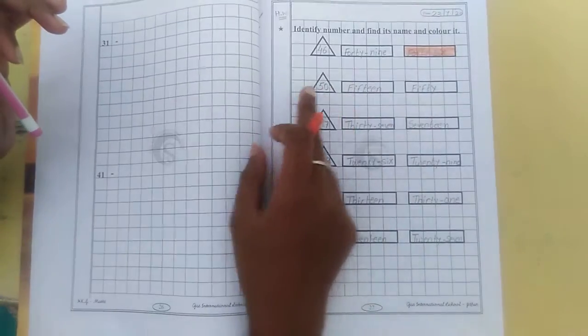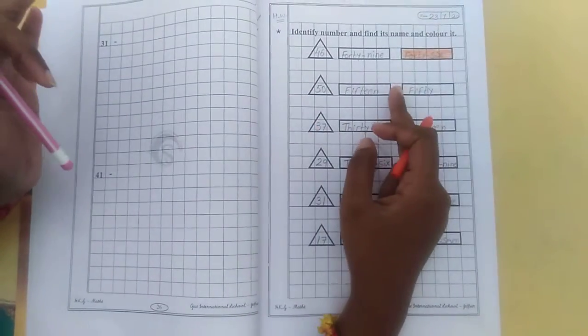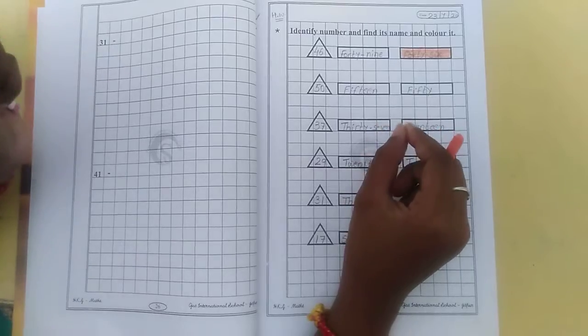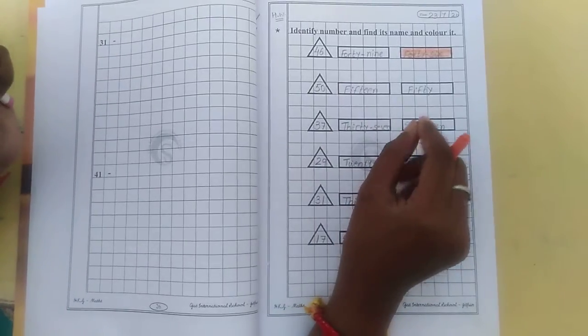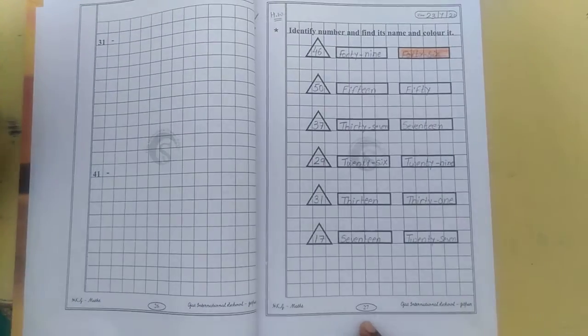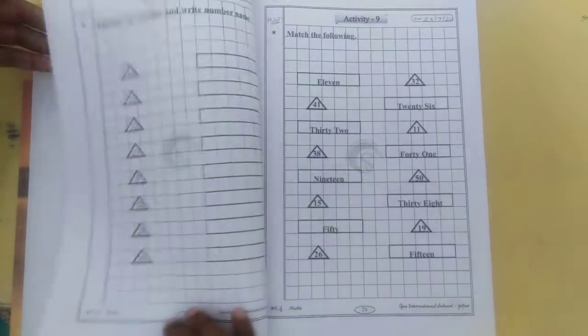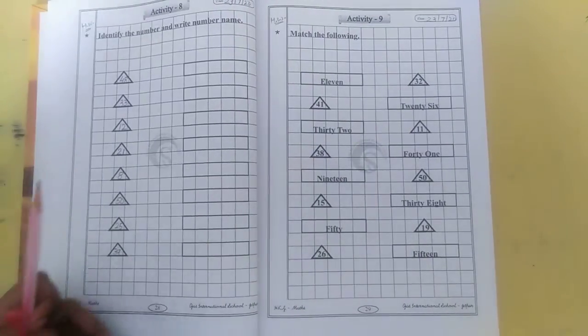So this way you have to read the number first and number name also and you have to find correct number name and fill the color. So this is your homework in page number 27. Now next page, activity 8. So what is given here?